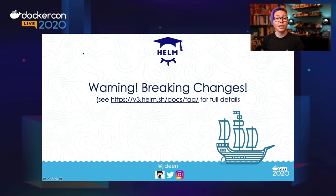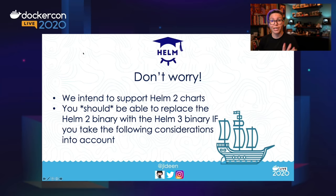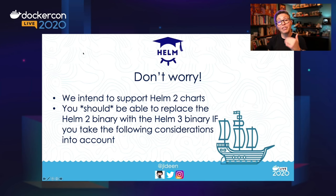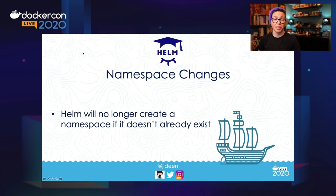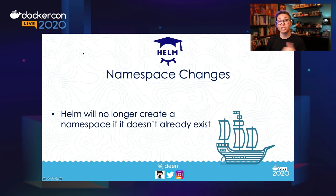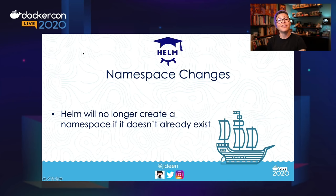There are some breaking changes, and I want to focus on this with the emphasis of: don't worry. We still tend to support Helm 2 charts. You should be able to replace the Helm 2 binary with the Helm 3 binary, so long as you take the following considerations into account. First, there were some changes with how we handled namespaces. Previously in Helm 2, if I did `helm install jenkins stable/jenkins`, that would deploy into whatever namespace I was already in. But if I added `--namespace` and that namespace didn't exist, Helm 2 would go out and create that and then release it. Helm 3 doesn't work that way — it's no longer going to create a namespace automatically. You will have to create the namespace first and then run the `helm install` command.